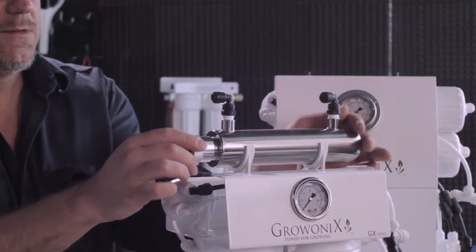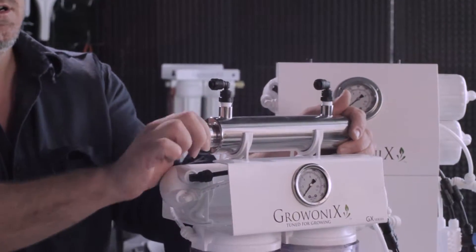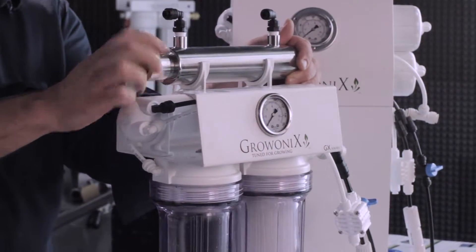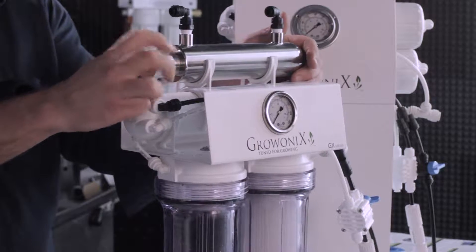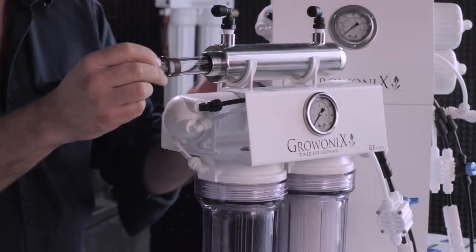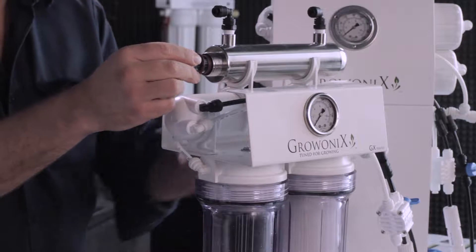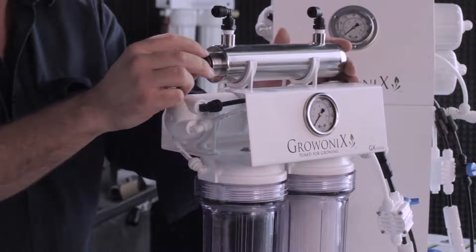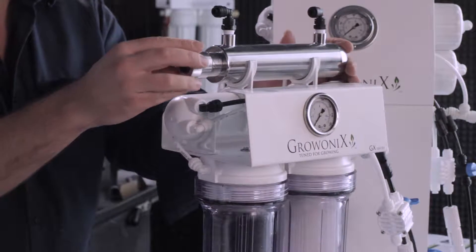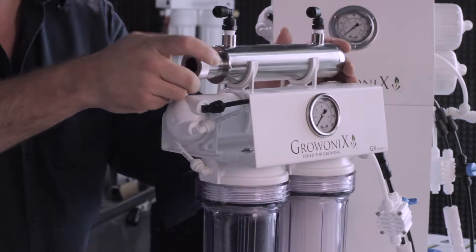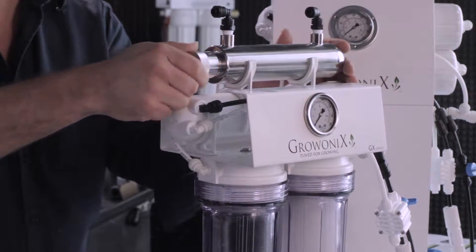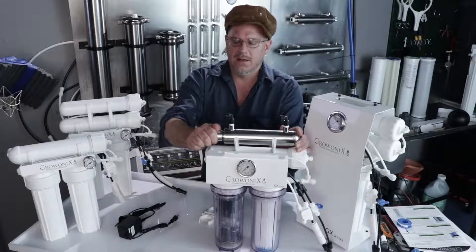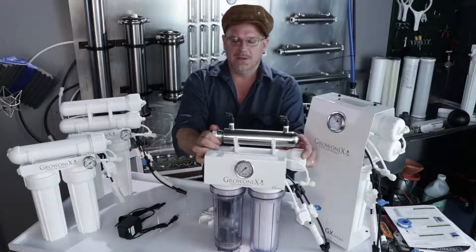The next thing we want to do is make sure the end cap is snug. And I'm going to pull it off to show you what it looks like underneath. The quartz sleeve that houses the bulb is in here. And there is an O-ring. And you want to tighten this thing until you feel the cap touch the O-ring. Right there. And just a little bit more. Not too much. And it's good to go.